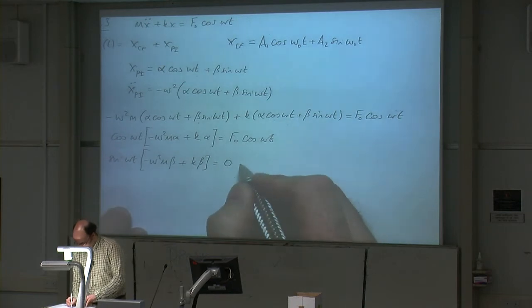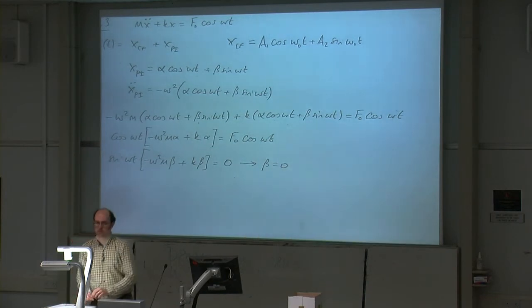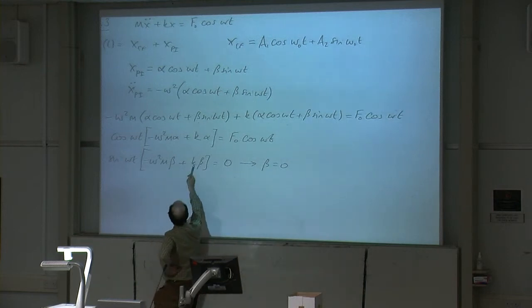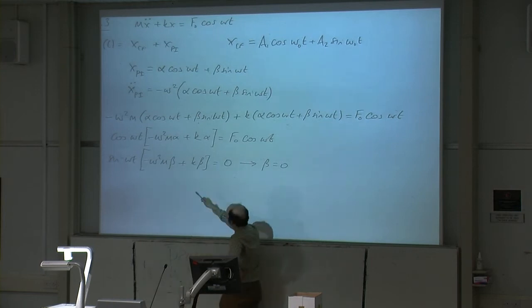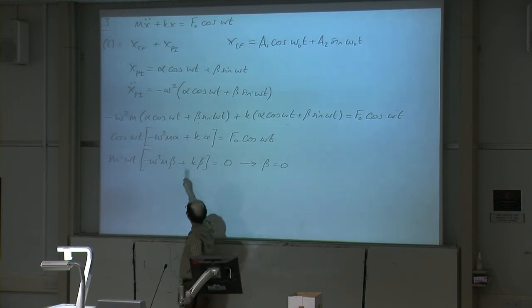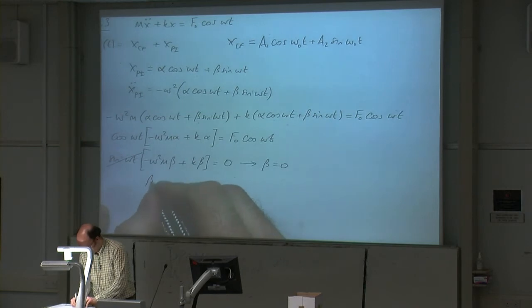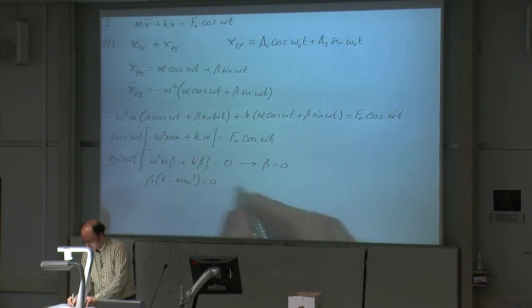The sine omega t equation equals 0 because there is no sine omega t term on the right-hand side — we've just got a cosine omega t term. It's quite clear that beta must be 0, since omega squared cannot be 0, m is not 0, and k is not 0. We end up with beta times (k minus m omega squared) equals 0, and the only way this equation can be true is if beta equals 0.